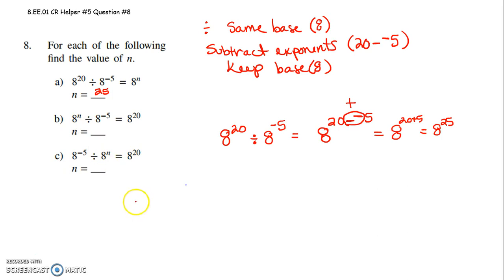Alright, so now the second one says 8 to the what divided by 8 to the negative 5th is 8 to the 20th. So it's 8 to the sum number, because when I'm dividing, I'm going to keep my base, I'm going to subtract my exponents.